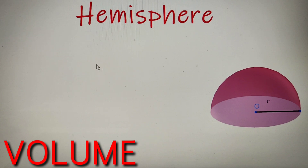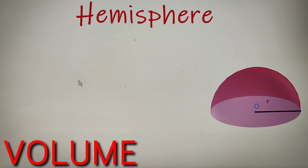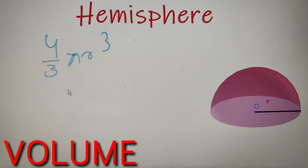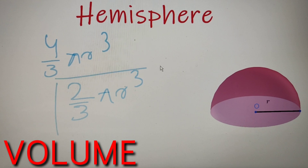Every three-dimensional figure has an additional property called volume. By virtue of it, it can hold liquid or fluid inside it, and the maximum capacity of fluid it can hold is called the volume of the three-dimensional figure. The volume of a hemisphere is simply half that of a sphere. Since the volume of a sphere is 4/3 πr³, the volume of a hemisphere is equal to 2/3 πr³.